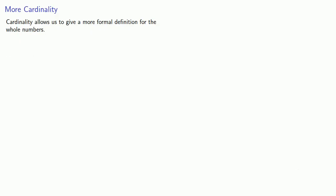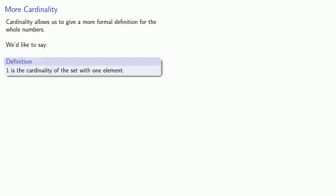Cardinality allows us to give a more formal definition for the whole numbers. We'd like to say that 1 is the cardinality of the set with one element, but we can't. How do we know that a set has one element? We can't define a concept in terms of that same concept. It's like saying blue is the color of blue objects. So for now we will at least define the whole numbers.